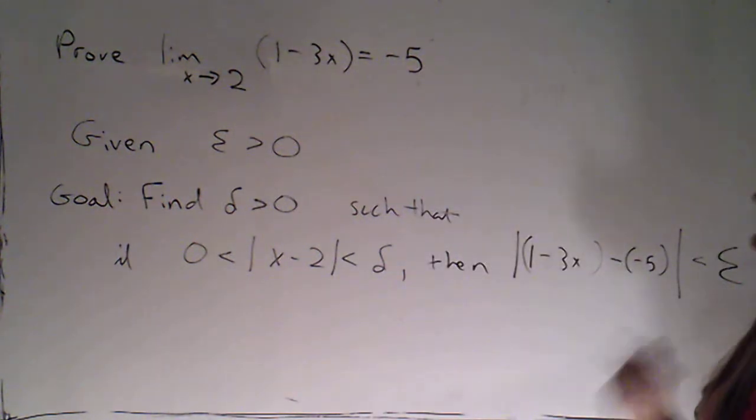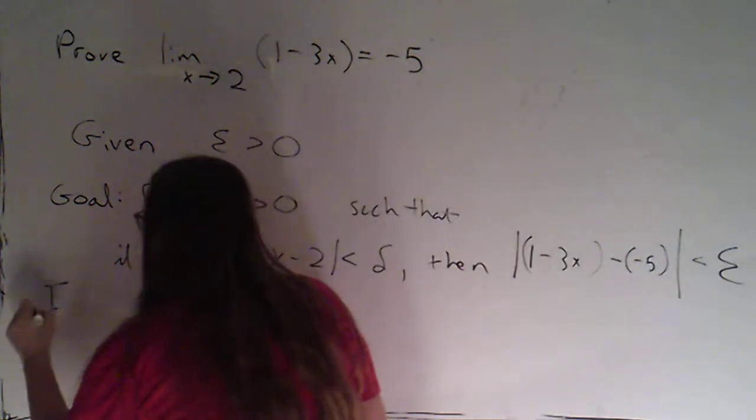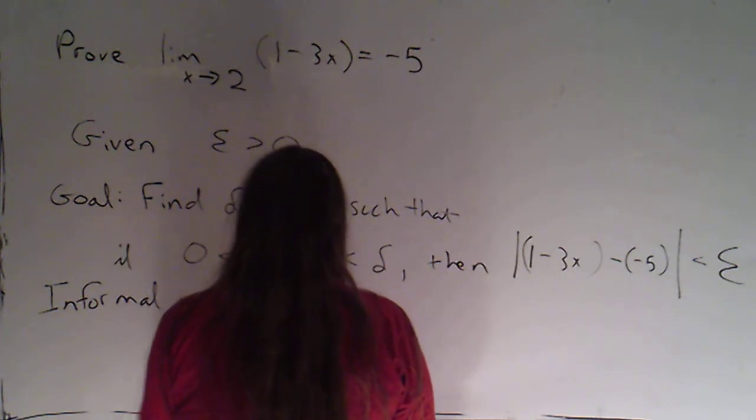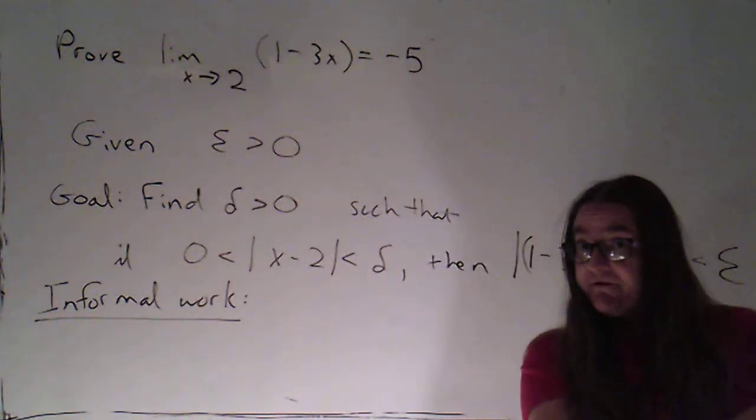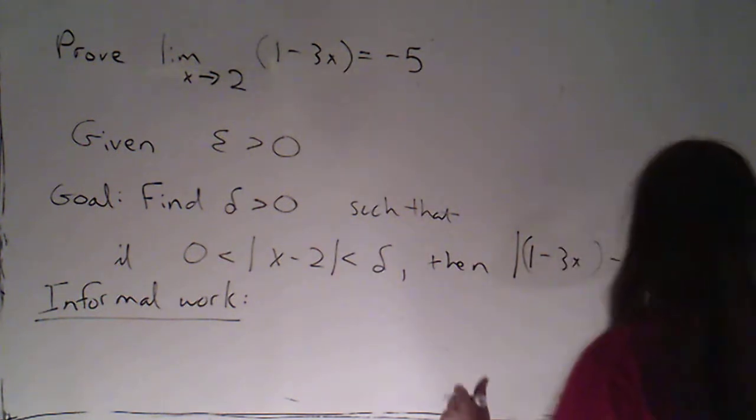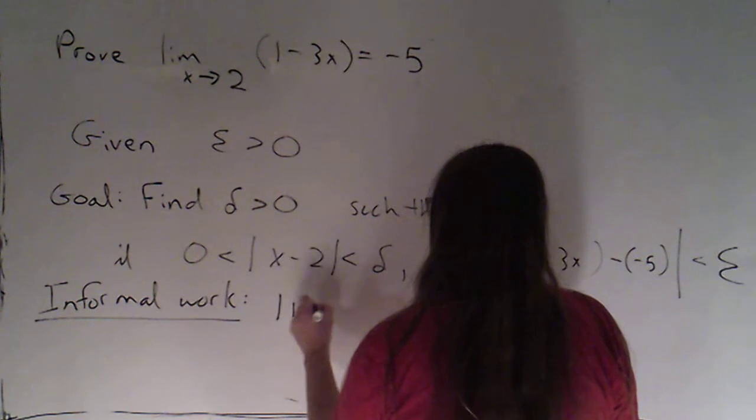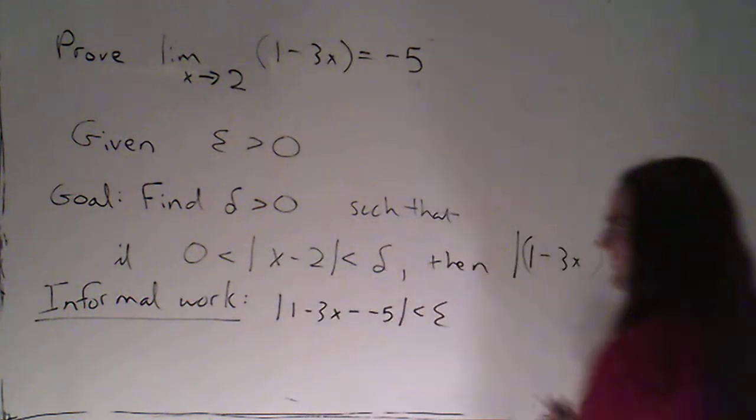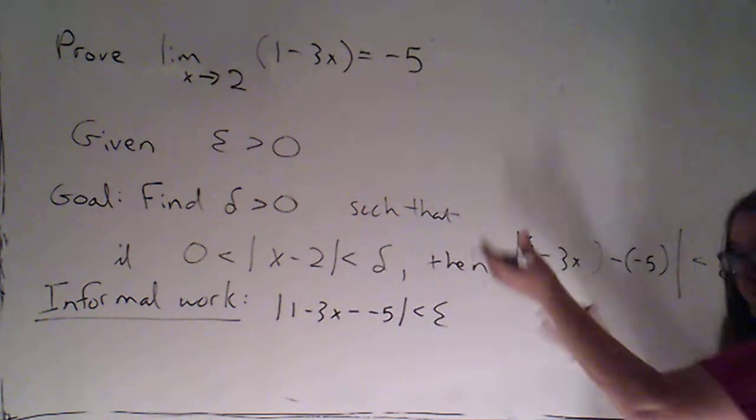So I'm going to just label this is going to be my informal work. And I do want to clearly label it and distinguish that from my formal proof. So I'm going to start with this. So we have the absolute value of 1 minus 3x minus negative 5 less than epsilon. I'm just going to simplify that. I'm going to explore what it means for this to be true.